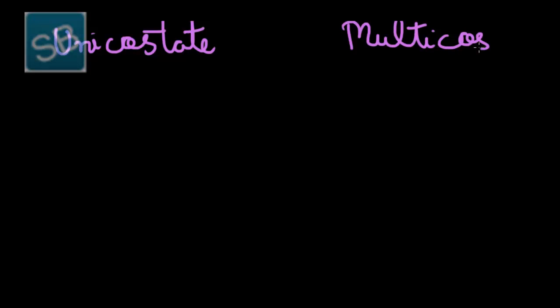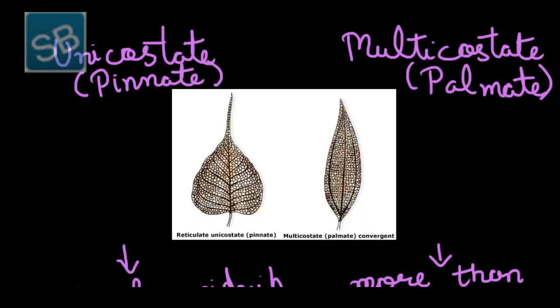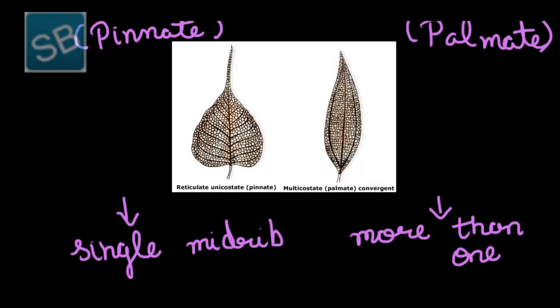Further, the two types of venation are divided into two more types: unicostate and multicostate. Unicostate venation, which is also known as pinnate venation, is the type of venation in which only a single midrib occurs that runs from leaf base to apex.